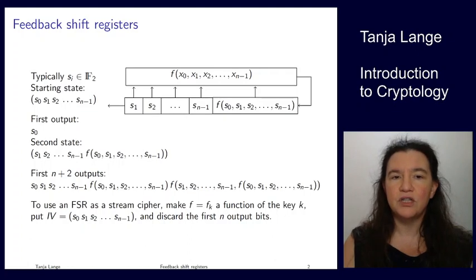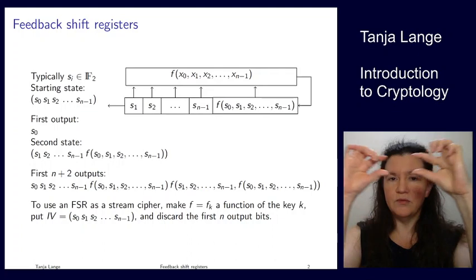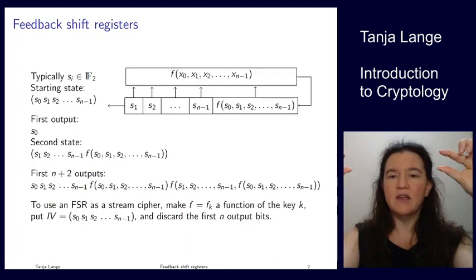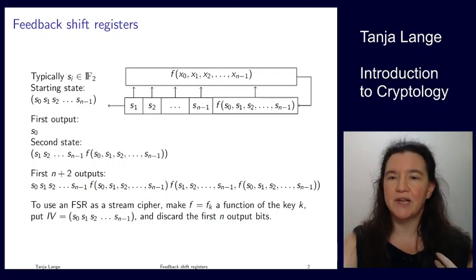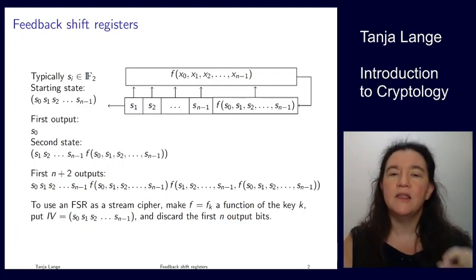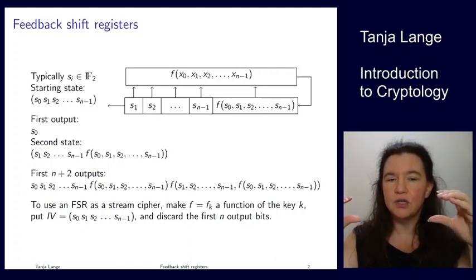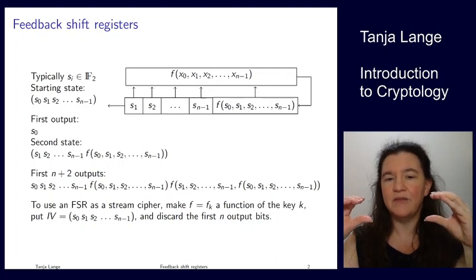So when you want to use such a feedback shift register in a stream cipher, then you make this update function a function of the key. So there's an f sub k now. So it depends on what key is involved, that you have agreed upon. Then you put the IV, the initialization vector, into the initial state. So your initial state will have n bits and your IV will have n bits.